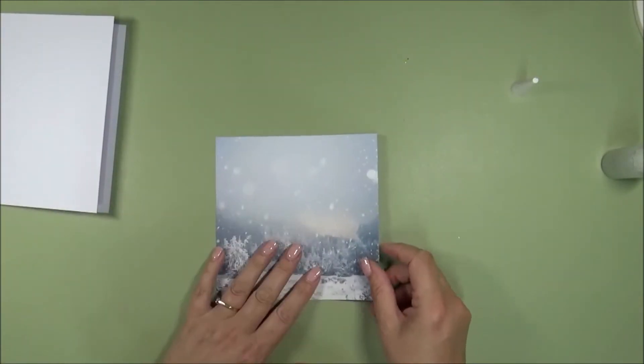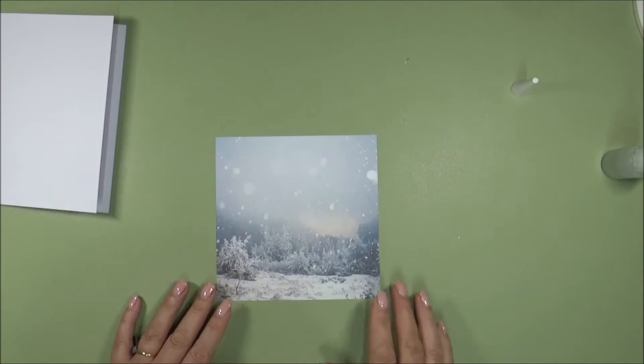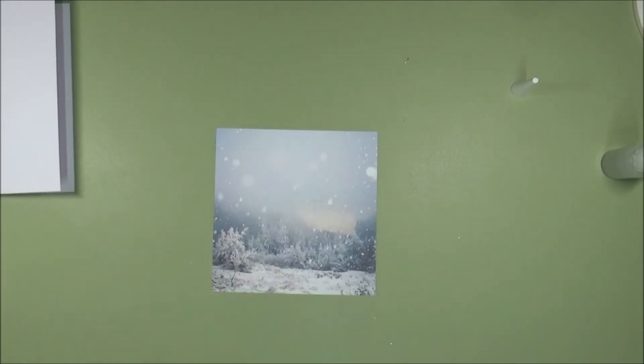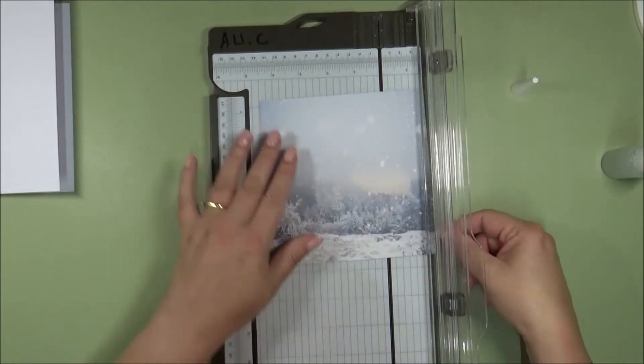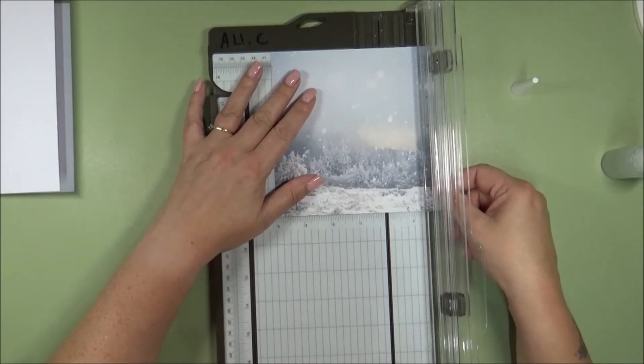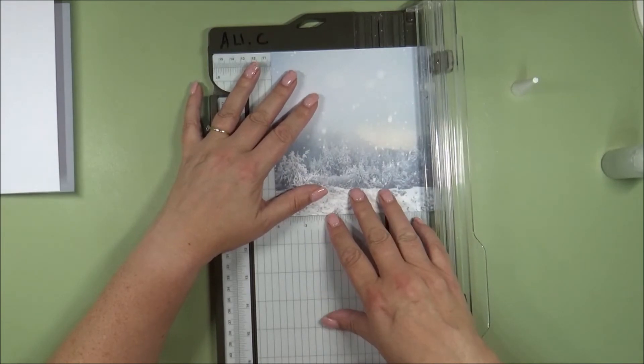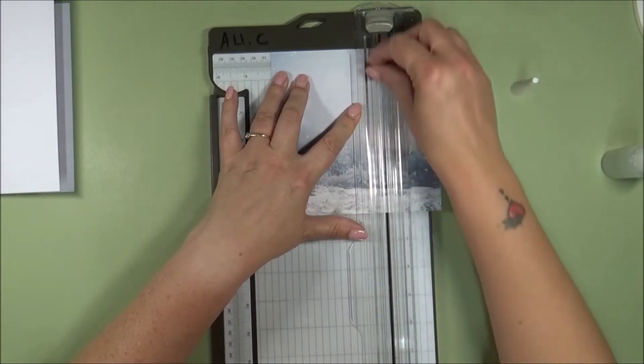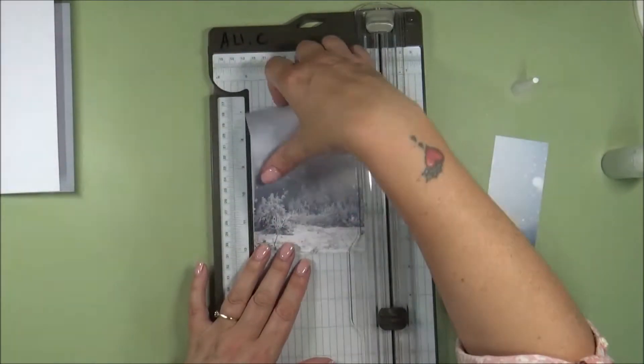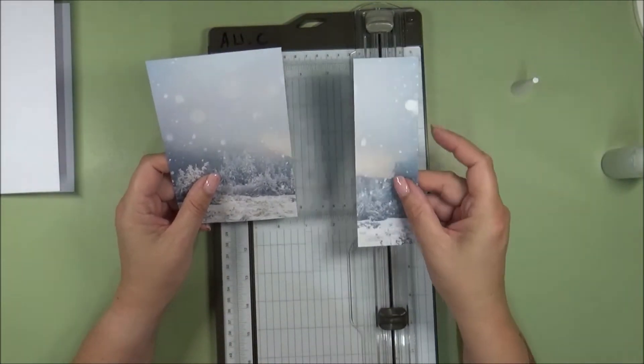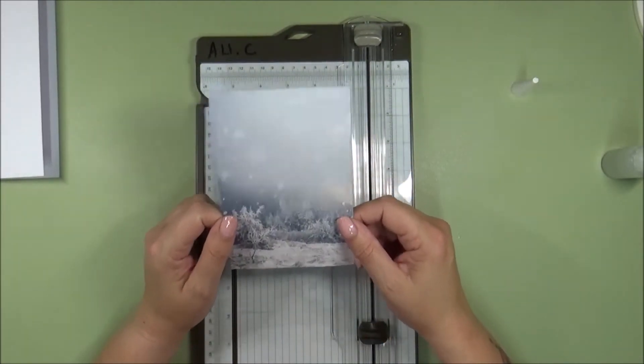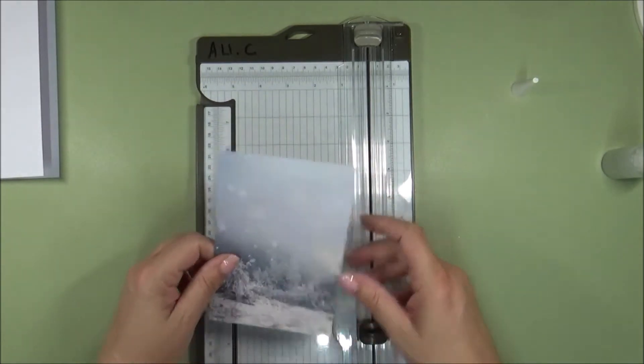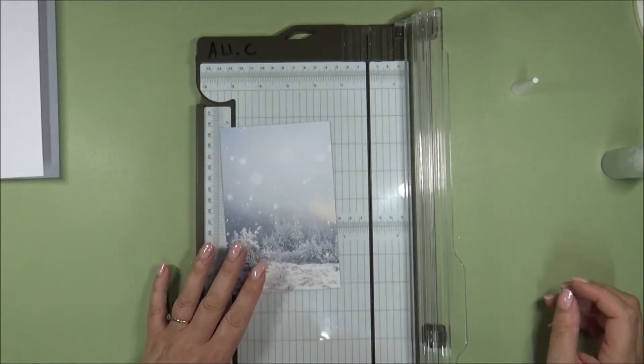And then what you want to do, so this piece measures 6 by 6. So we're just going to cut it down. Grab your trimmer. And as I say, this is a 6 by 6 piece of pattern paper. And you want to put it in your trimmer. So you've got it the right way up and you just want to cut it at 4 inches. So then you've got that piece here and this piece is going to be scrapped. So you can use that for a different project.